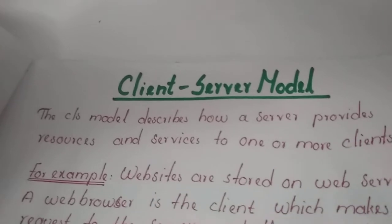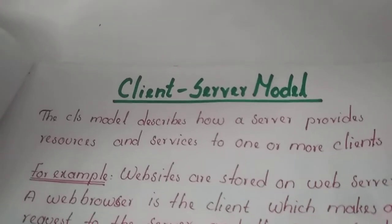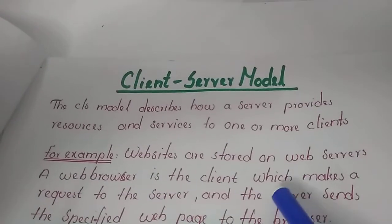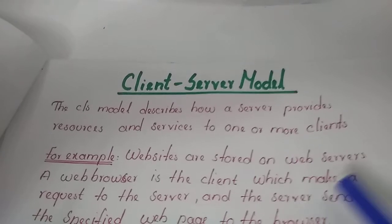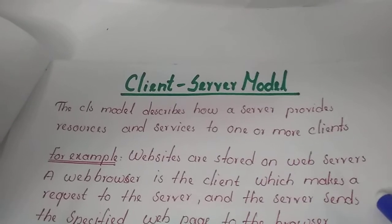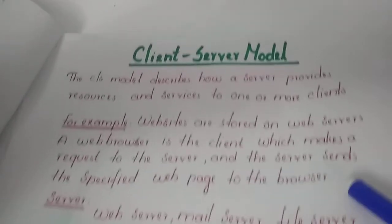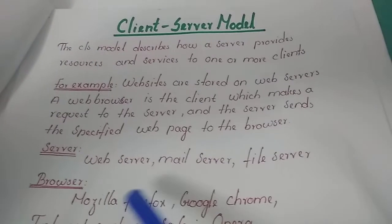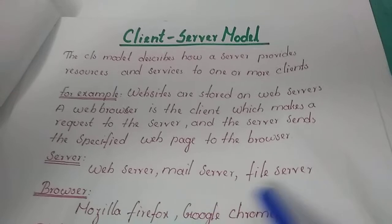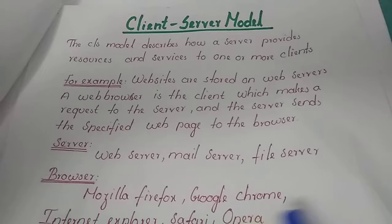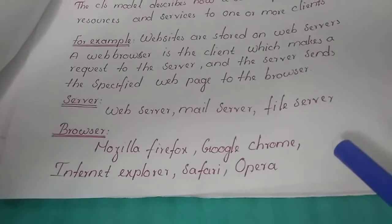Now we will see the definition of the client-server model. The client-server model describes how a server provides resources and services to one or more clients. For example, websites are stored on web servers. A web browser is the client which makes a request to the server and the server sends the specified web page to the browser. Some examples of servers are web server, mail server, and file server. Examples of web browsers: Mozilla Firefox, Google Chrome, Internet Explorer, Safari, and Opera.